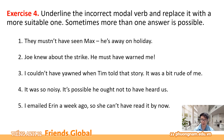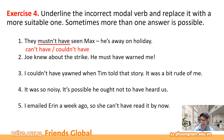Let's practice with exercise number 4. Underline the incorrect modal verb and replace it with a more suitable one. Sometimes more than one answer is correct. Bài tập số 4 yêu cầu chúng ta nhận diện những động từ khiếm khuyết sai và thay thế chúng bằng những động từ đúng. Number 1: The person have seen Max. He's away on holiday — động từ khiếm khuyết 'person have' không đúng. Với thông tin he's away on holiday, chúng ta cần suy diễn logic ở dạng phủ định: can't have hoặc couldn't have — họ không thể nhìn thấy Max, anh ấy đang đi nghỉ dưỡng mà.